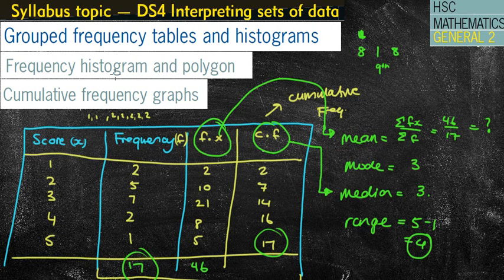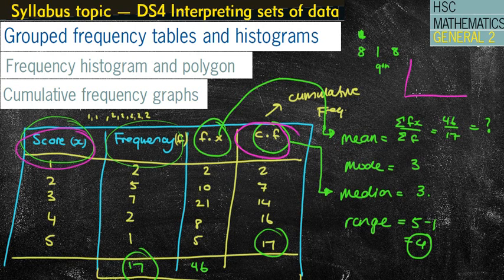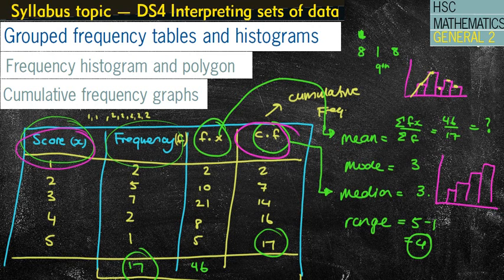This lesson we're mostly dealing with how to draw a histogram and polygon. A frequency histogram and polygon uses the score and the frequency column, whereas a cumulative frequency histogram and polygon uses the score column and the cumulative frequency. A frequency histogram looks randomized, whereas a CF histogram and polygon keeps going up. For the frequency polygon you put the dots in the middle and draw the lines together; for the cumulative frequency polygon or ogive, it goes continuously upward.